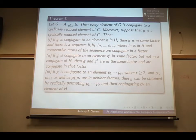So if G is conjugate to an element G prime in some factor, but not in a conjugate of H, then G and G prime are in the same factor, and conjugate in that factor. And the last, if G is conjugate to an element P1 to Pr, where P and P1, P2, P3 alternate in the first part, the A, and P2 is in B, etc. That's the structure of this free product. Then, for R greater than 2, that is for length greater than 2, as well as from Pi to Pi plus 1, they are in distinct factors. That's what I'm saying, alternate. Then G...